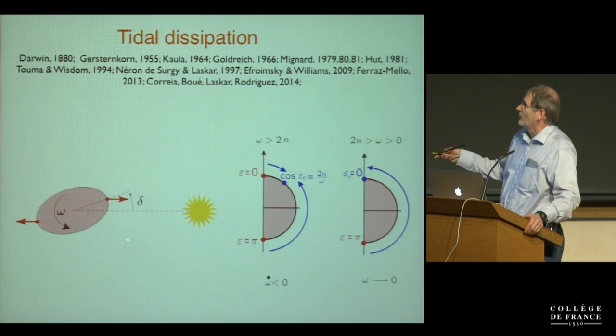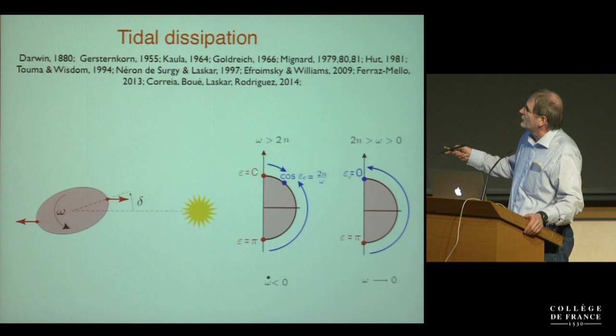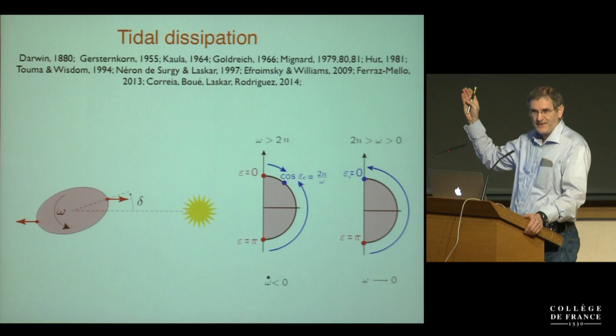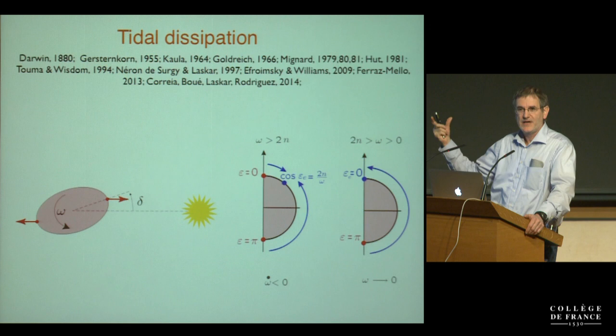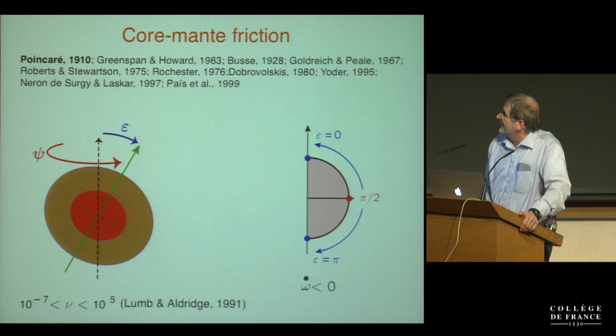Tidal dissipation also changes the obliquity. For slow rotation, the obliquity goes towards an equilibrium, and as the rotation keeps going down this equilibrium point goes to zero. So with only tidal dissipation you always end up with planets perpendicular to their orbit. This is the quickest effect; then comes the slowing of rotation, then the orbital evolution. But there is another geophysical effect: core-mantle friction.